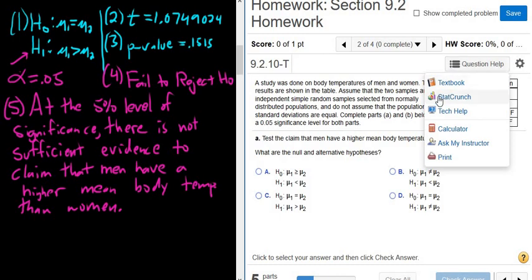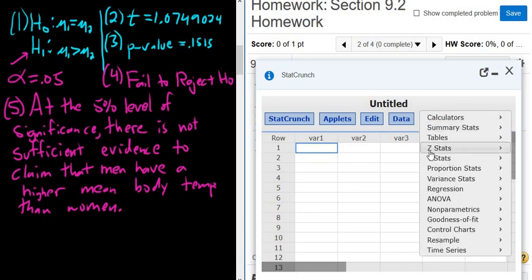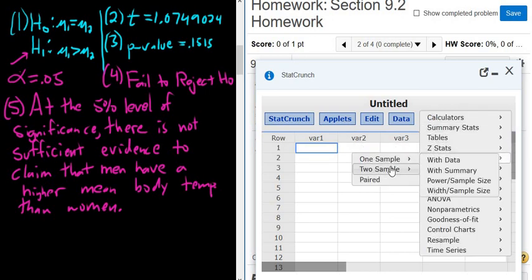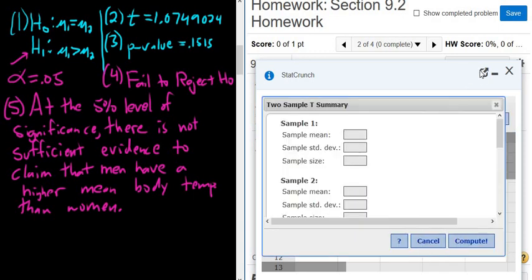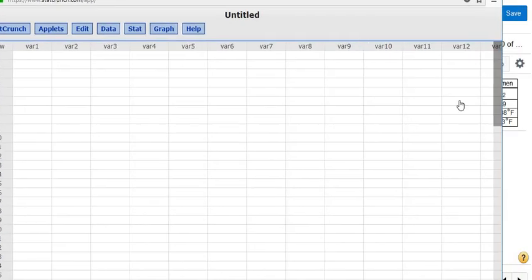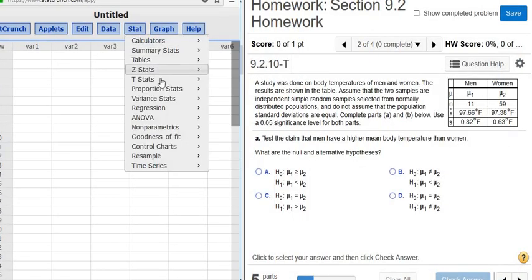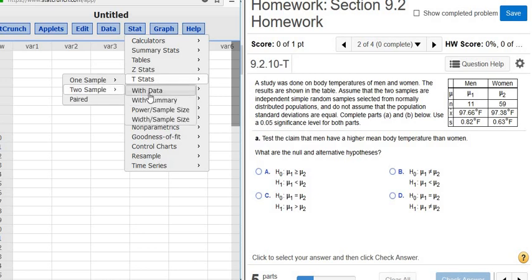So to find the confidence interval, you go back to StatCrunch. And you go to the same place. Stat T Two Sample with Summary. So Stat T Two Sample with Summary. Let me make this bigger so it's easier to see. Well, it's gone. I've got to do it again. Oh well. So again, it's Stat T Two Sample with Summary.